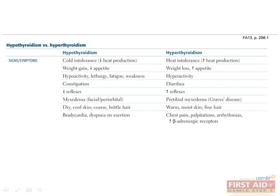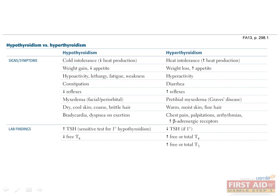In general, all of the symptoms of hypothyroidism involve slowing things down, whereas the symptoms of hyperthyroidism involve speeding things up. Please pay particular attention to the lab findings. Low free T4 indicates hypothyroidism and high free T4 indicates hyperthyroidism by definition. Hypothyroidism can either be primary if TSH is high, or secondary/tertiary if TSH is low. Similarly, hyperthyroidism can be either primary if TSH is low, or secondary/tertiary if TSH is high. Take some time to think through this in terms of feedback inhibition within the hypothalamic-pituitary-thyroid axis.